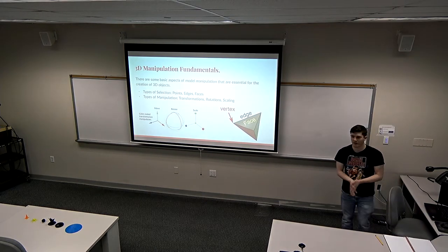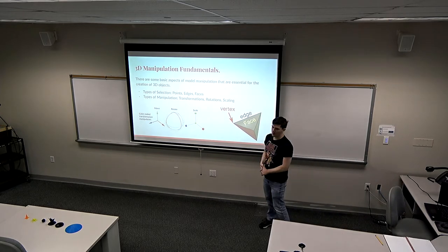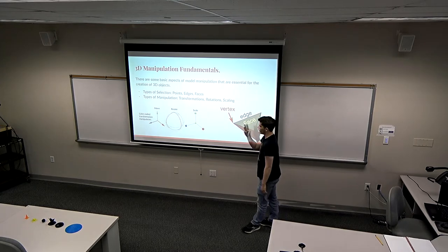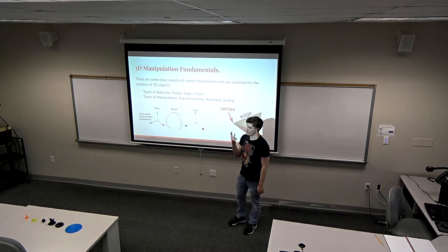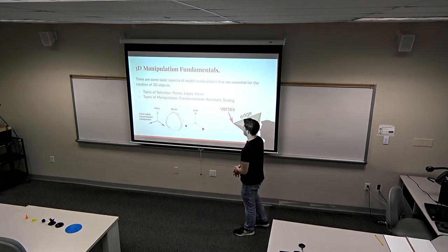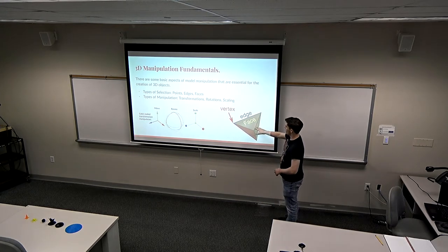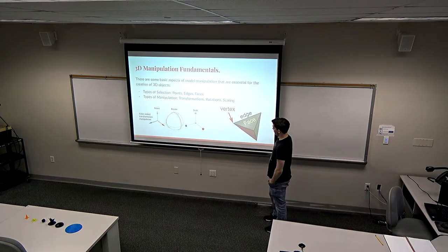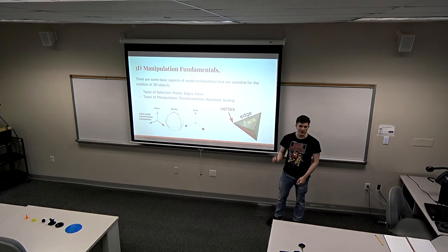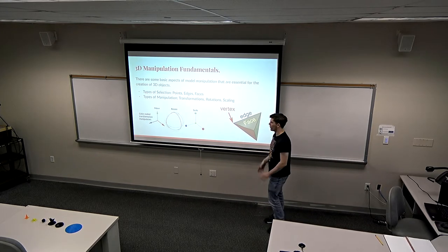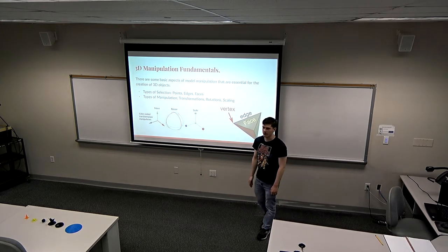Now getting into how you actually model. Before we can model, there are some very basic fundamental things we need to understand — two sets of three concepts. The first set is about how your model is built. A vertex is just a little point at any space — a dot that has data about where it is on a Y, X, and Z axis.